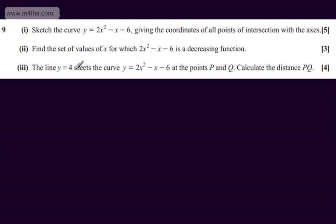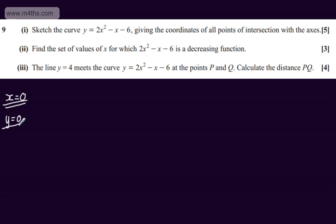This is a quadratic graph, and we need to consider when x is equal to 0, that will give us the point of intersection with the y-axis, and then when y is equal to 0, which will give us the points of intersection with the x-axis.